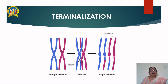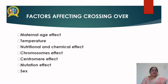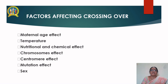There are many factors that affect the phenomenon of crossing over: maternal age effect, temperature, nutrition and chemical effects, chromosome effect, centromere effect, mutation effect, and the sex of the organism all affect crossing over on a larger scale.